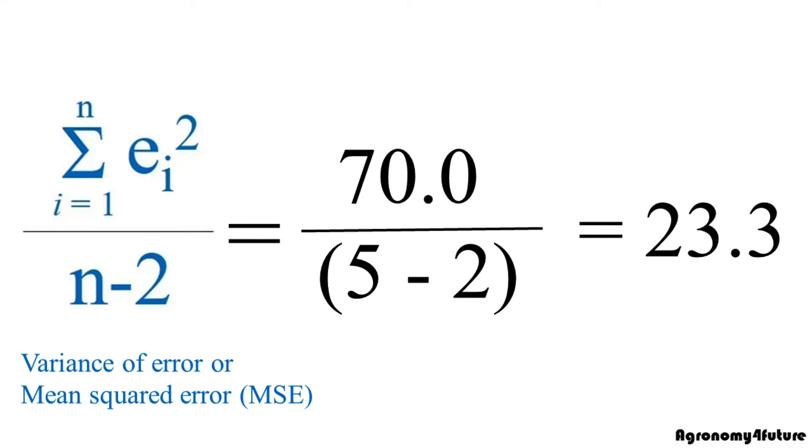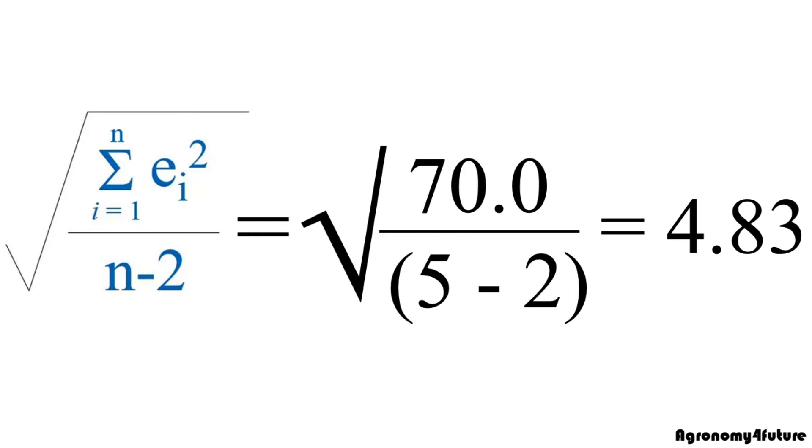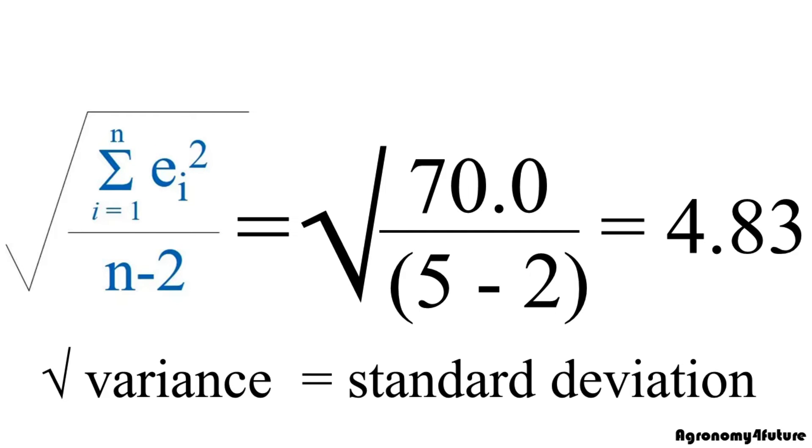Also, we call it mean squared error, or simply MSE. Let's divide 70.0 by 3. It would be 23.3. Then let's calculate square root of 23.3. It's 4.83. Square root of variance is standard deviation.